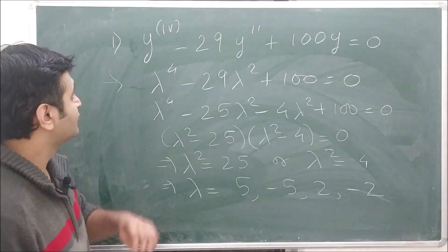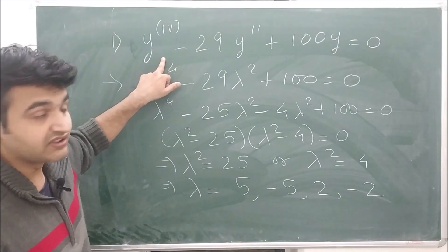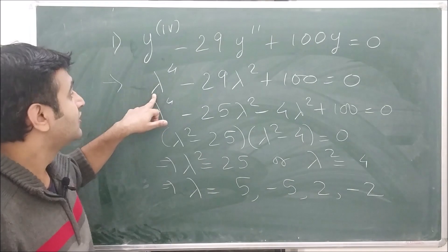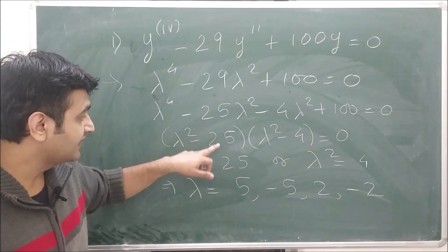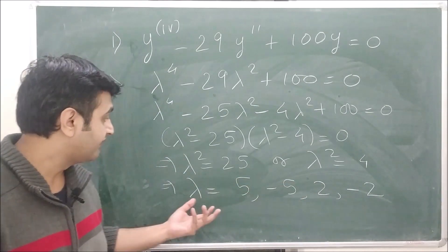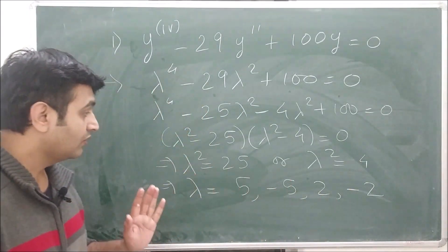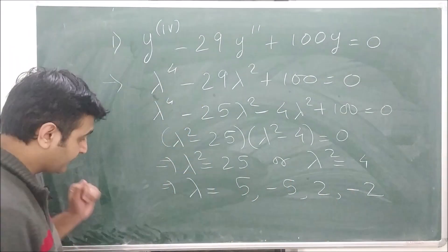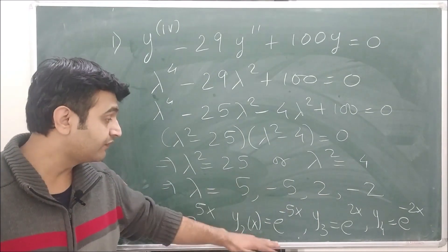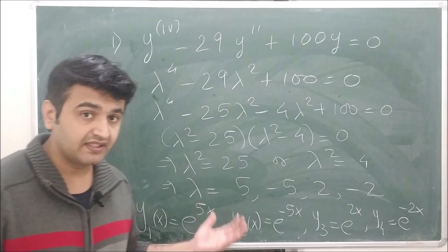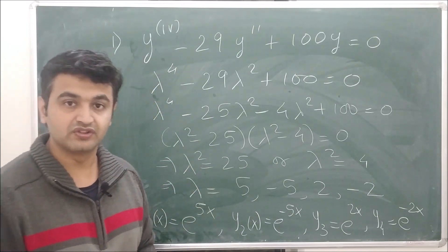The first case is when all the roots are real and distinct. For this fourth order linear homogeneous differential equation, the first thing you do is write the auxiliary equation. In this case the auxiliary equation is λ⁴ − 29λ² + 100 = 0. Factorizing gives λ² = 25 or λ² = 4, so the roots are ±5 and ±2. Since all roots are distinct, the four linearly independent solutions are e^(5x), e^(−5x), e^(2x), and e^(−2x). You can verify independence by computing the Wronskian — a 4×4 determinant — which comes out to be non-zero.